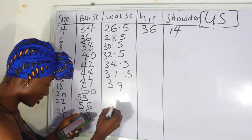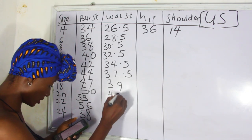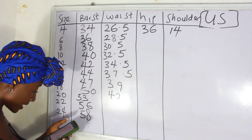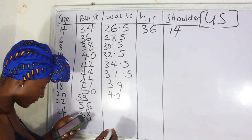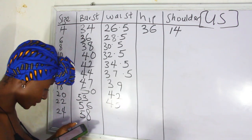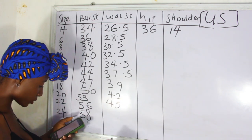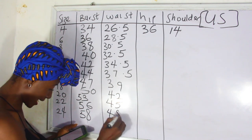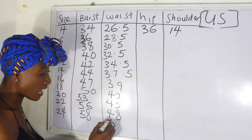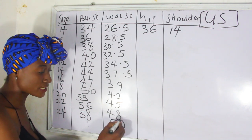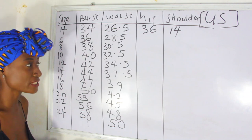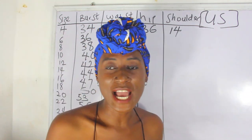For size 18 the waist is 42 inches, size 20 is 45 inches, size 22 is 48 inches, and size 24 is 50 inches. Those are your waist measurements.